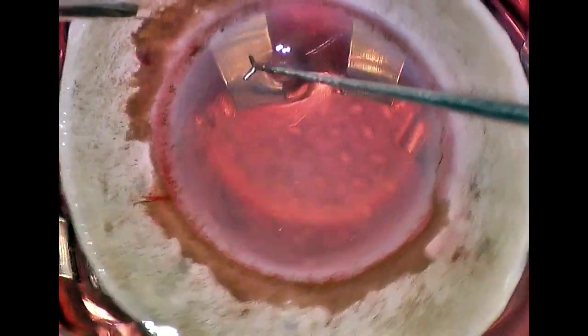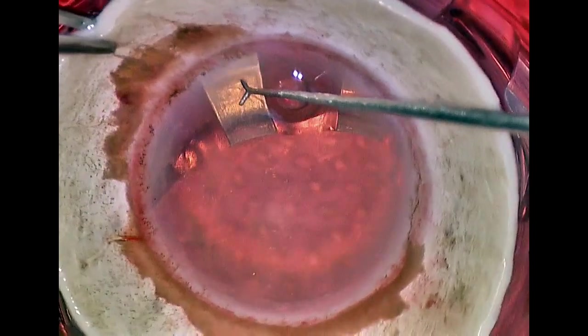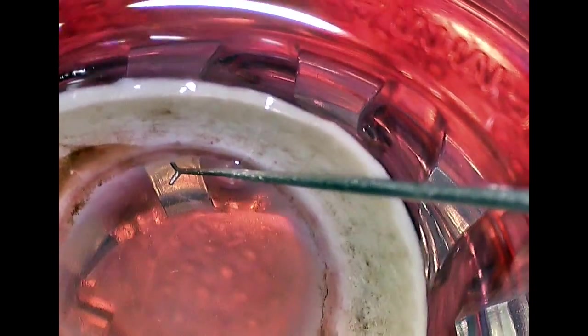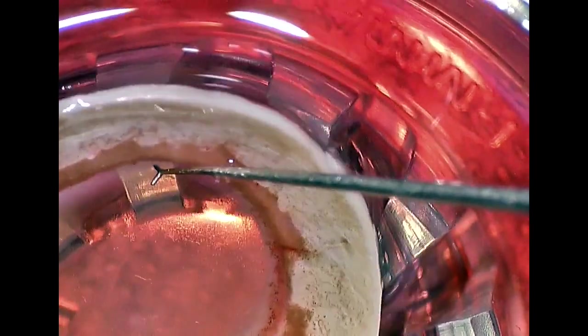We score that corneal endothelium by pinning the cornea between the post and the Y-hook and gently pulling. Right now we've got the Y-hook kind of hung up in a little bit of stroma, but once you get the proper depth you can just kind of daisy chain around the cornea scoring that endothelium.